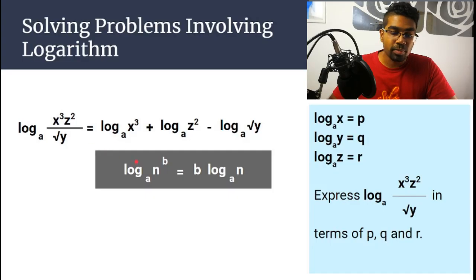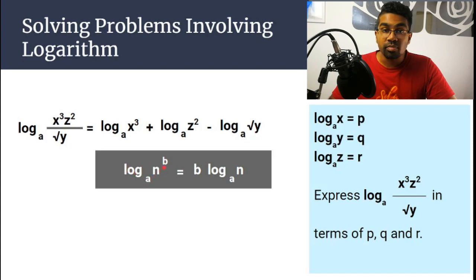The third law involves a power. So if our term has a power, then we can bring the power to the front of the log. So if it is log_a(n^b), b can be brought to the front. So this will become b·log_a(n) or b times log_a(n).